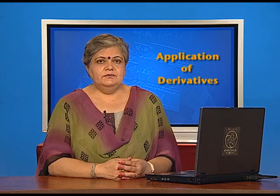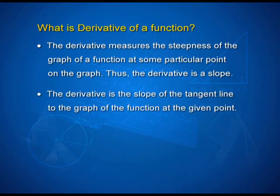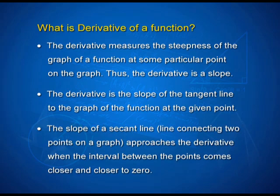So what does that all mean? What we have just shown is a representation of the fact that the derivative measures the slope of the tangent to the curve at any point. The derivative of a function measures the steepness of the graph — it is a slope. It is the slope of the tangent line to the graph of the function at the given point, and it is the slope of a secant line connecting two points in a graph in its limiting position when it becomes the tangent. In the limiting position, when the two points come closer to each other, we get the slope of the tangent, which is also what we understand as the derivative.